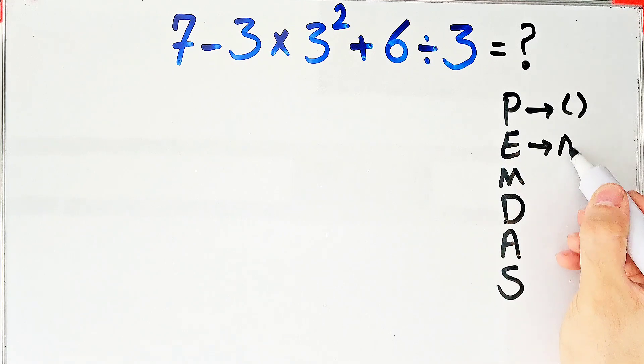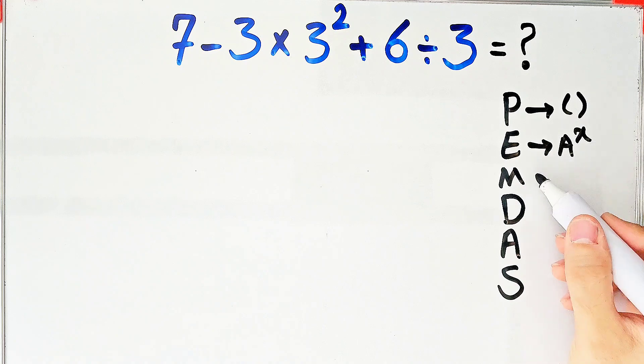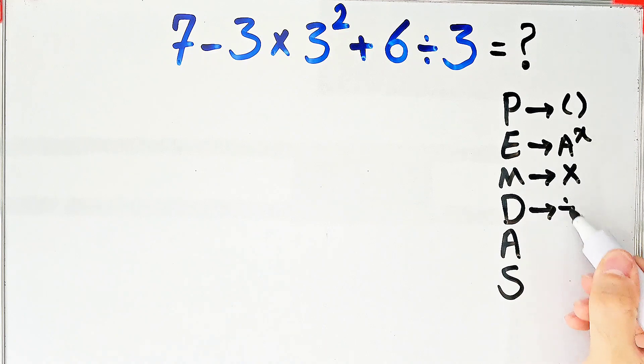M stands for multiplication, D stands for division, A stands for addition, and S stands for subtraction.